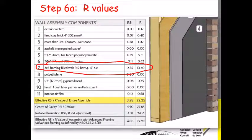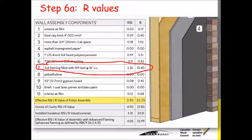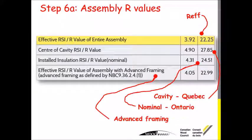Digging into that report, it gives you the R-values. I've circled the one that's the most time-consuming to calculate. In this case it's showing a two-by-six wall with R19 batts at 16 inches on center, giving an effective insulation of R13.4. It also gives effective assembly R-values. These are the same assembly values Sal discussed — the R-effective value, center of cavity (useful for Quebec), nominal (useful for Ontario, especially before 2017), and also an advanced framing option where you benefit a little from doing advanced framing.